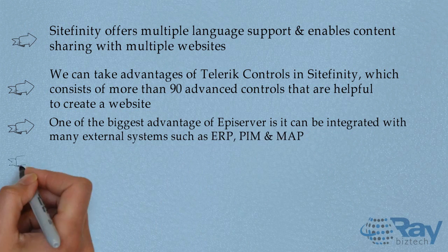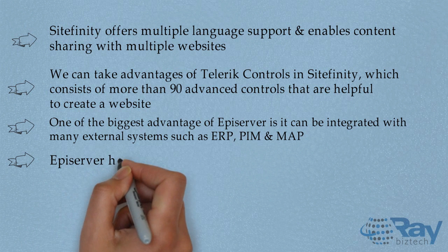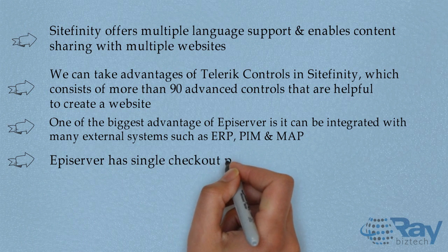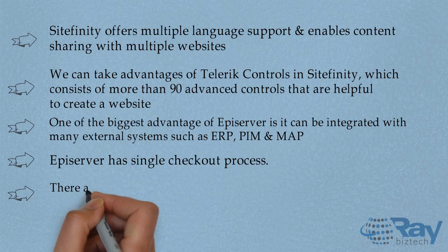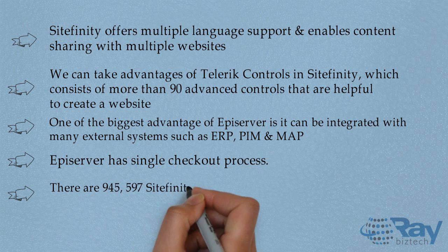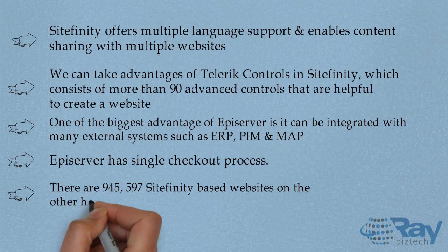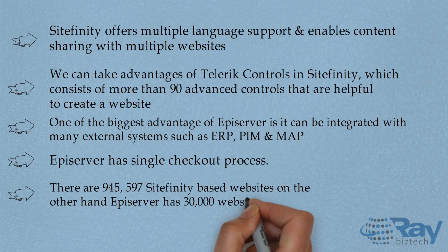One of the biggest advantages of API Server is that it can be integrated with many external systems such as ERP, PIM, and DAM. API Server also has a single checkout process. There are 945,597 Site Affinity-based websites, while API Server has 30,000 websites.